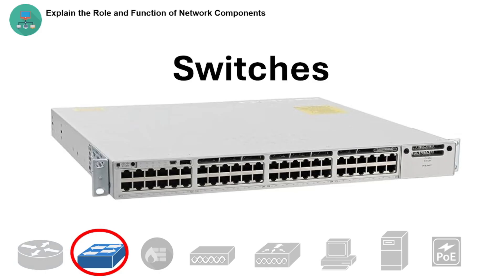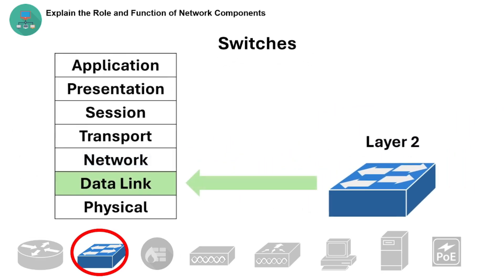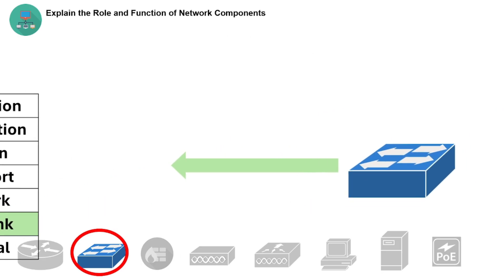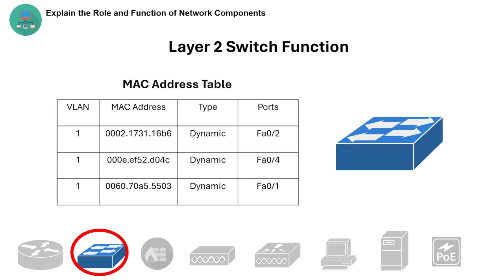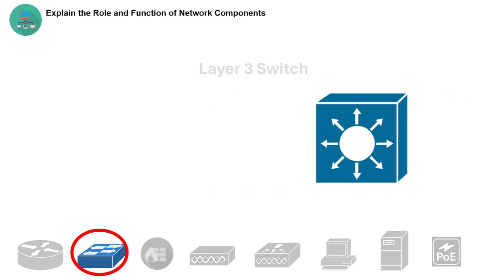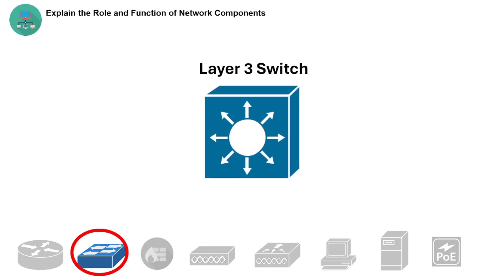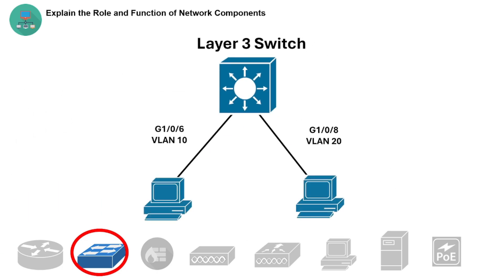Let's now explain the role and function of a switch. There are layer 2 and layer 3 switches. A layer 2 switch works on the data link layer — it forwards data within the same network segment using MAC addresses and creates MAC address tables to learn which devices are on which ports, but has no routing capability. A layer 3 switch works on the network layer, functioning like a layer 2 switch but also routing between VLANs or subnets using IP routing.